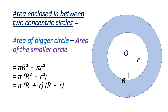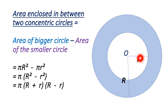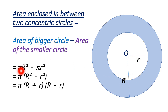First, we are to find out the area of the enclosed section. This area is enclosed in between two concentric circles — one is the bigger circle with radius R and another is the smaller one with radius small r. To get the area of this shaded section, the area of the bigger circle is πR² and from it we subtract the area of the smaller circle, which is πr².